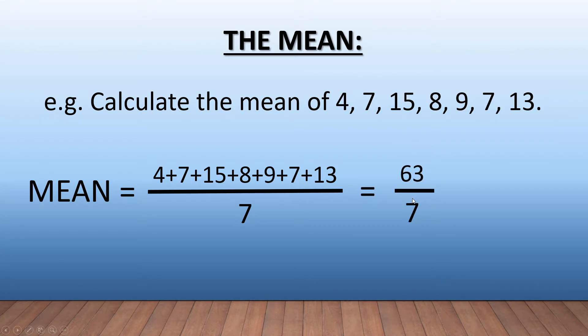That's going to give us 63 divided by 7, which is going to give us an answer of 9. And that's how we calculate the mean of those numbers. This could be worth anywhere between one to three marks depending on how complicated they make it.